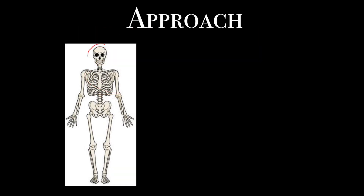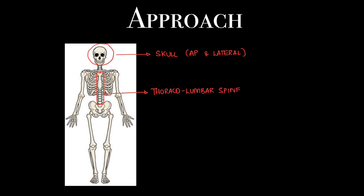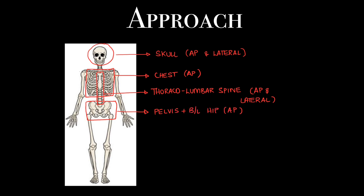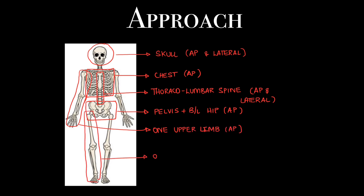What X-rays are taken in a dysplasia skeletal survey? Skull — AP and lateral view. Thoracolumbar spine — also AP and lateral view. Next, chest AP, pelvis with bilateral hips AP, and one upper limb with one lower limb.